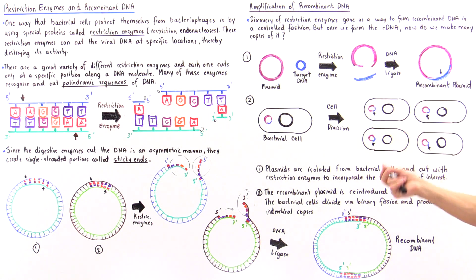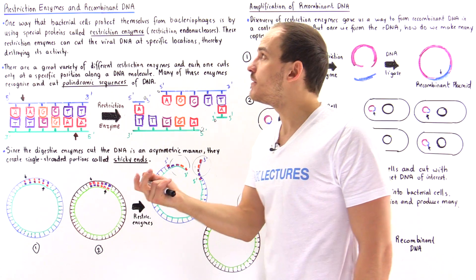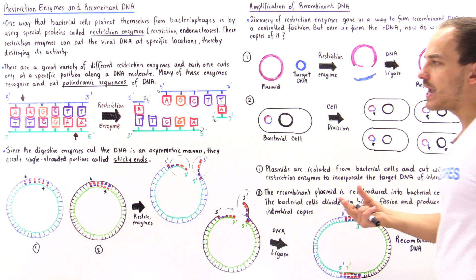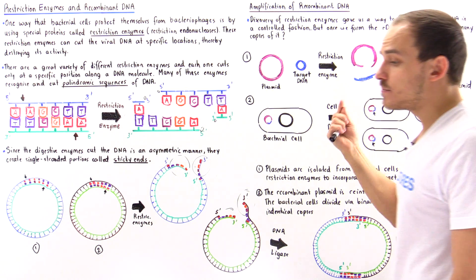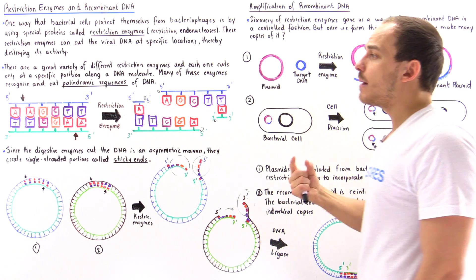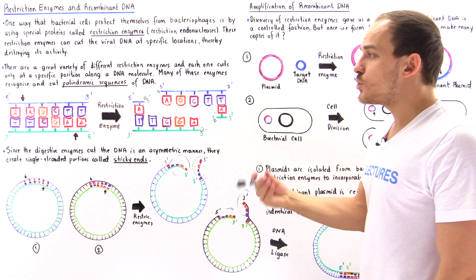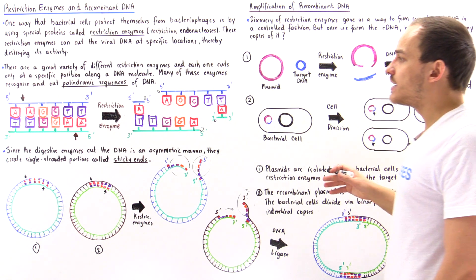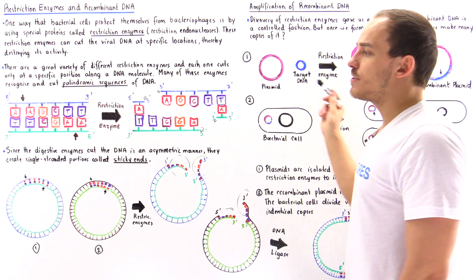To form recombinant DNA molecules, we actually need restriction enzymes. One way to amplify the recombinant DNA that we form is by using these plasmids. However, this method has one important limitation — the size of that recombinant DNA. We can't use recombinant DNA molecules that are too large because these plasmids have a limit to how large they can actually get. So the problem with this method is there is a limit to the size of the recombinant DNA that we can amplify via this particular approach.